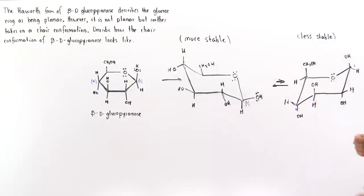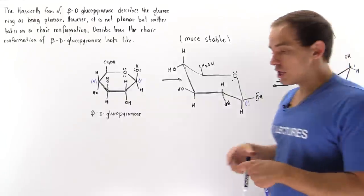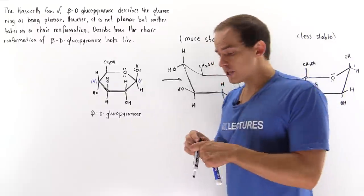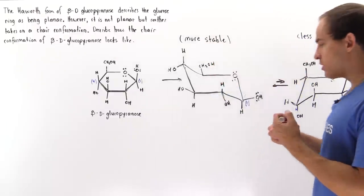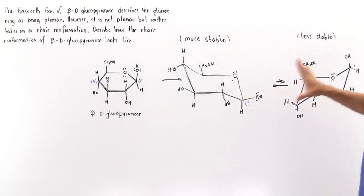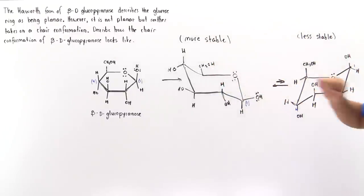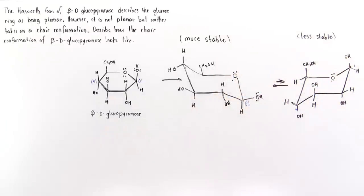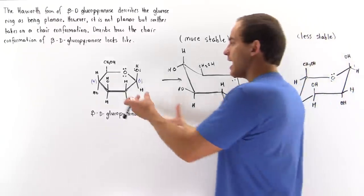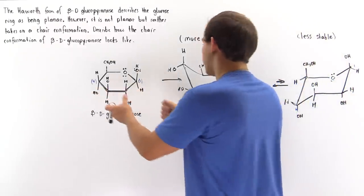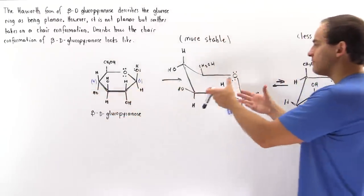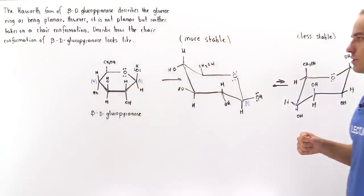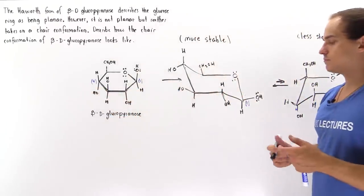This is how we basically transform the Haworth form of beta-D glucopyranose — or any other carbohydrate molecule — into the two types of chair conformation. This is actually how the molecule looks in nature, because in reality we don't have a planar form; we have the chair conformation.